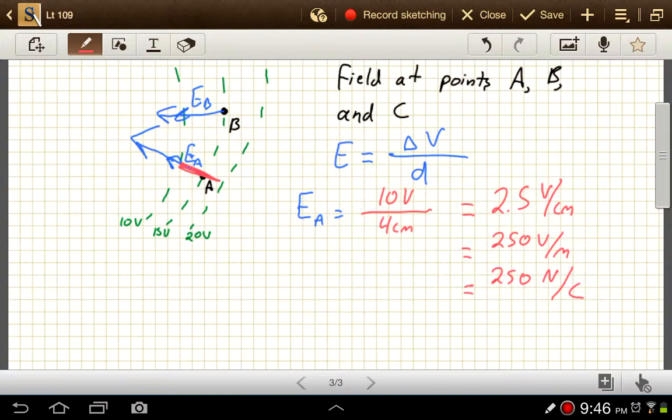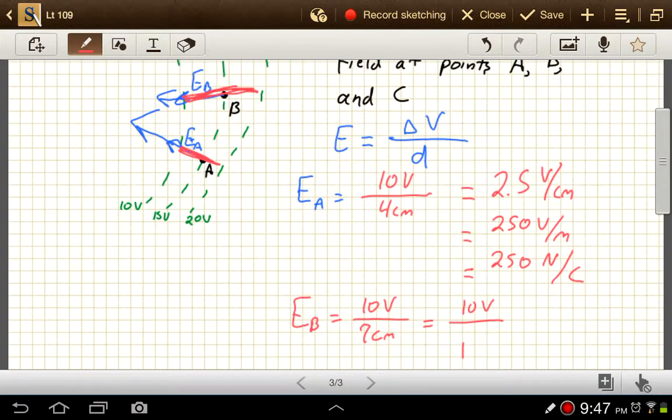And then the electric field at B. That would again be a change of 10 volts that we're looking at. But that distance looks more like 1, 2, 3, 4, 5, 6, maybe 7 centimeters. So that's 10 volts over .07 meters. So that one's gonna be like 130 newtons per coulomb, something like that.